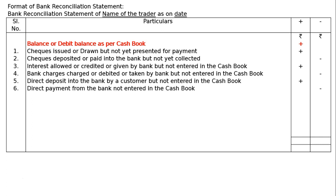The sixth item is a direct payment from the bank not entered in the cash book. At times the bank pays directly to a customer or for expenses such as insurance premium as per our instruction, reducing the pass book balance. You have to reduce your cash book balance to find the balance as per pass book.